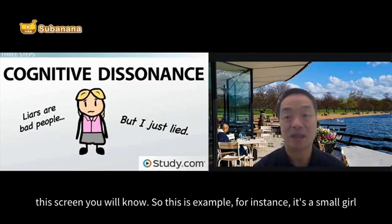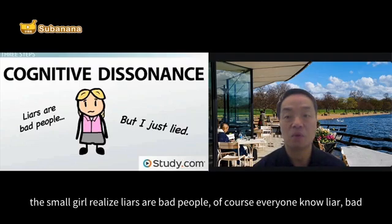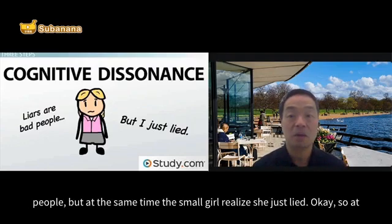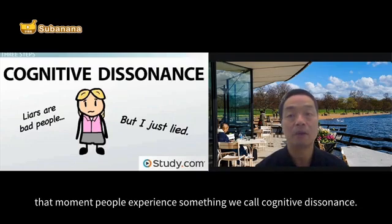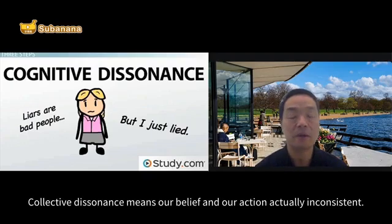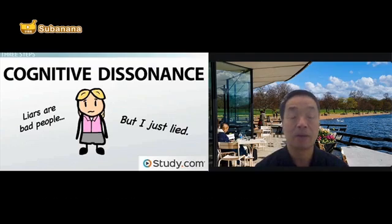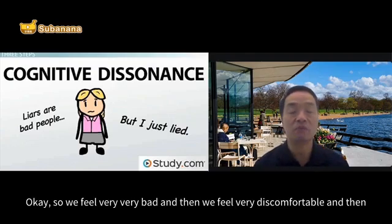So what is the meaning of cognitive dissonance? Here is an example: a small girl realized that liars are bad people — of course everyone knows liars are bad people — but at the same time the small girl realized she just lied. At that moment, people experience something we call cognitive dissonance. Cognitive dissonance means our belief and our action are actually inconsistent.